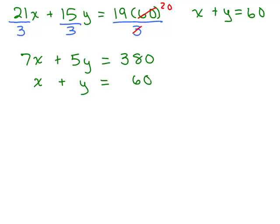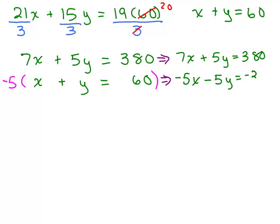So we have X plus Y equals 60. And I want to either eliminate the X values or the Y values. I'd rather multiply by 5 than 7. So I'm going to take the second equation and multiply by negative 5 on both sides of the equation because that will have a negative 5Y and the Ys will cancel out. So what does this give me for my two new equations? The first one just stays the same, 7X plus 5Y equals 380. And the next one is negative 5X minus 5Y and negative 300. Remember to multiply both sides of the equation by that negative 5.